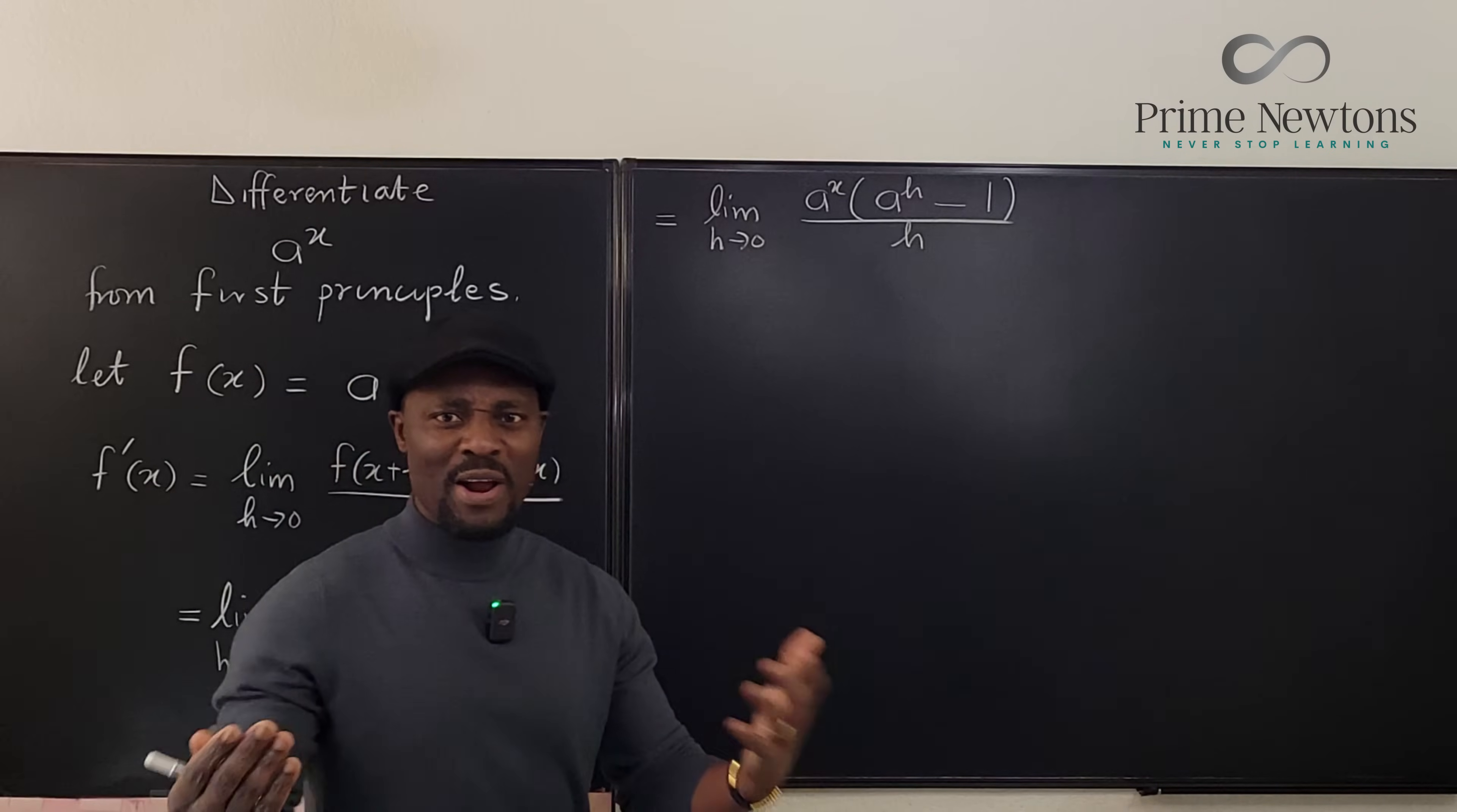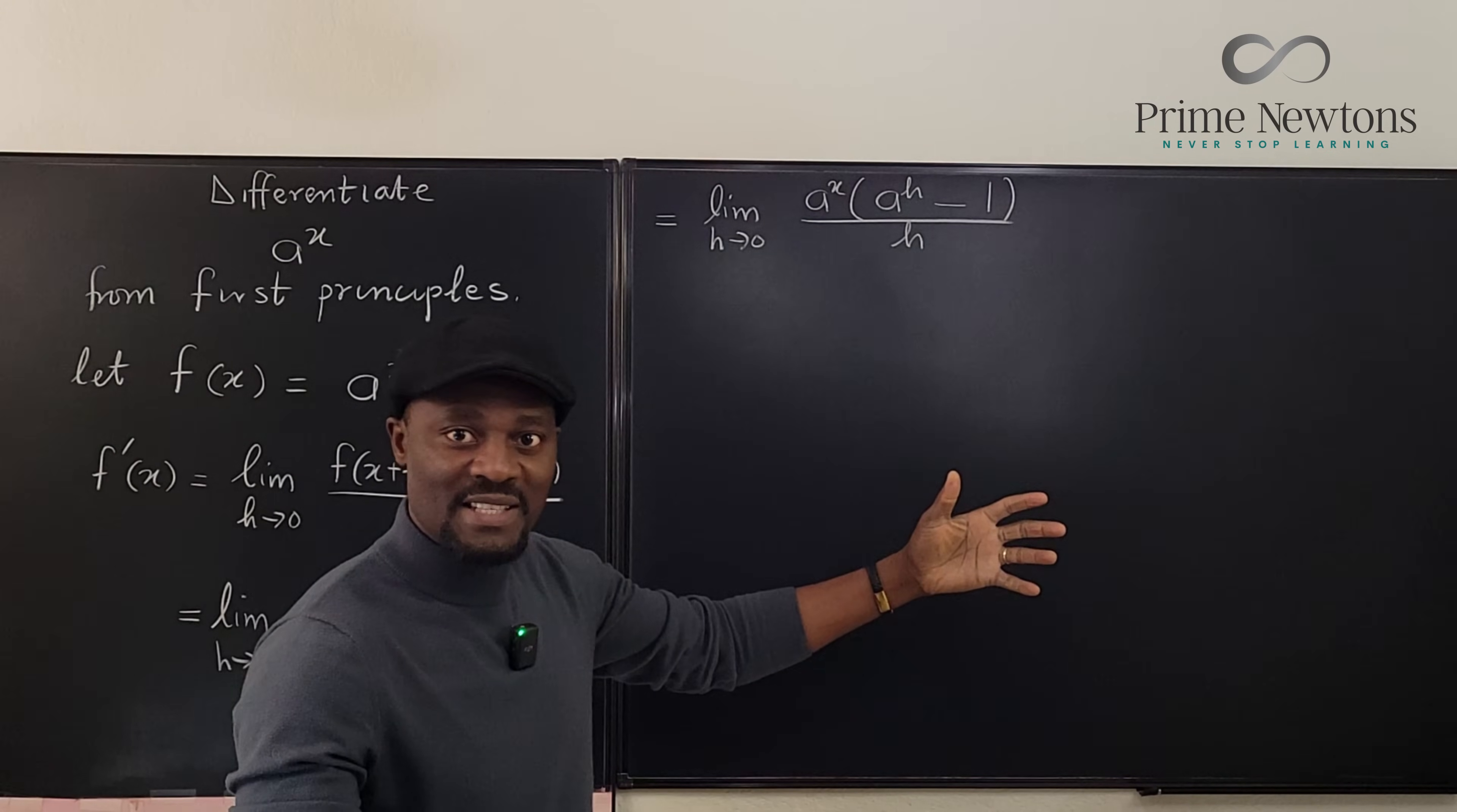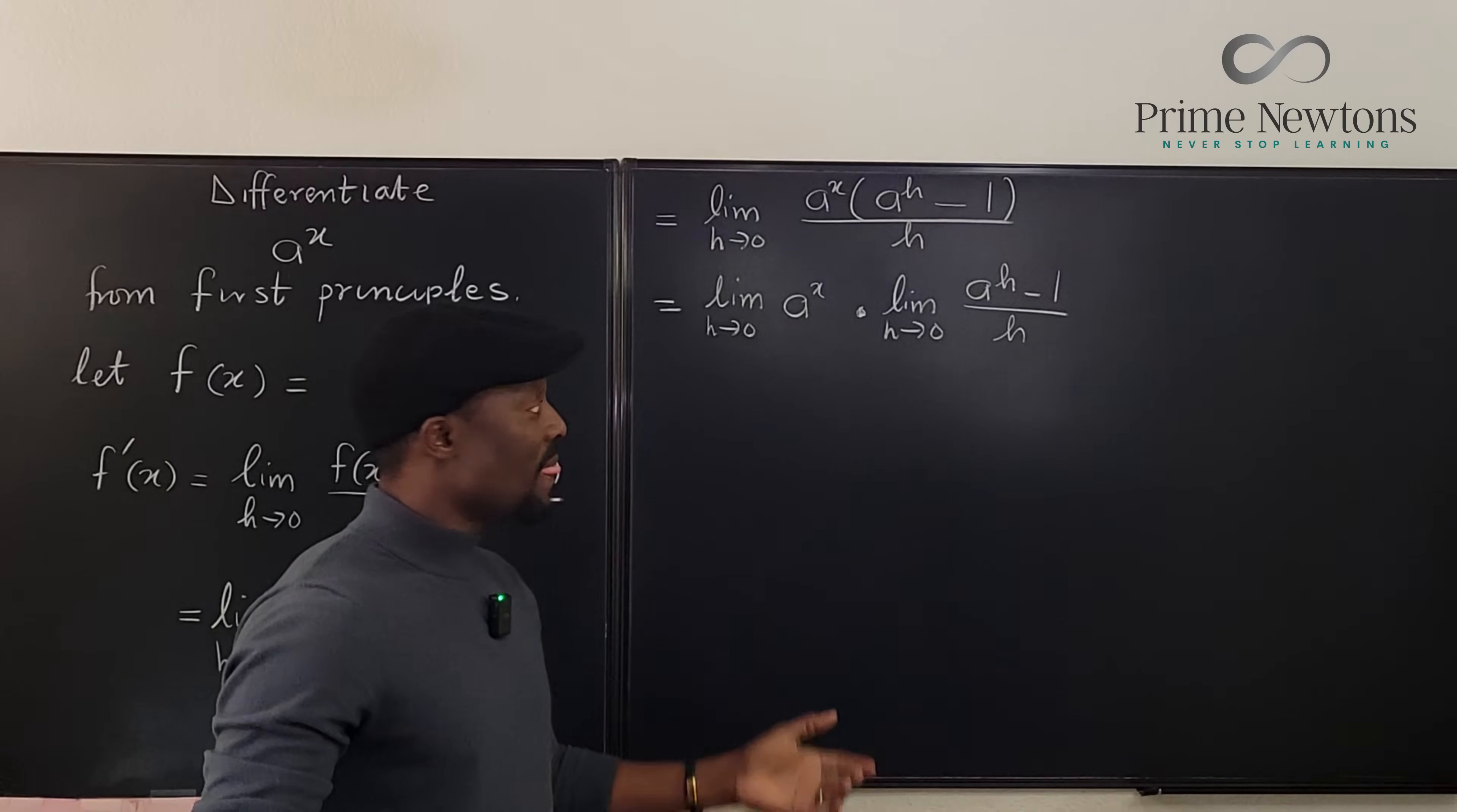So you're going to ask me what advantage do I gain doing this? Well there's a major advantage because we've come to the end of the exercise. Why? Because this limit is in terms of h, this guy does not have any h involved in it and I can apply the product rule for limit. So I can rewrite this as the limit as h goes to zero of a to the x multiplied by the limit as h goes to zero of a to the h minus one divided by h.